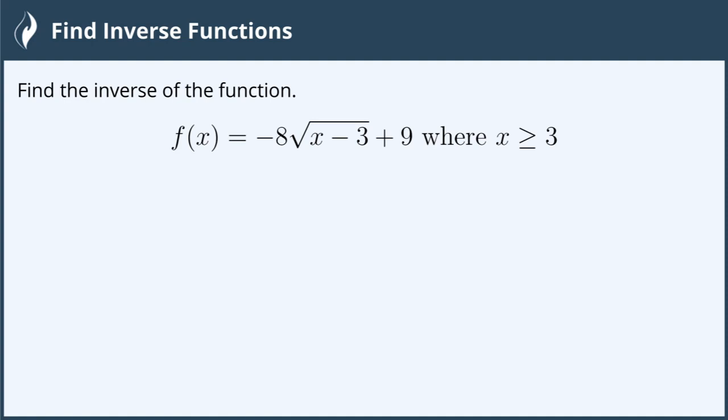In this problem, we're going to find the inverse of the function f(x) = -8√(x-3) + 9, where x is greater than or equal to 3.